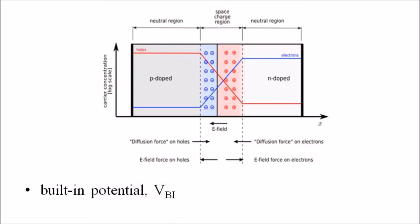The region just adjacent on either side of the PN interface loses their neutrality and becomes charged, thus forming the space charge region or depletion layer as shown in this figure.